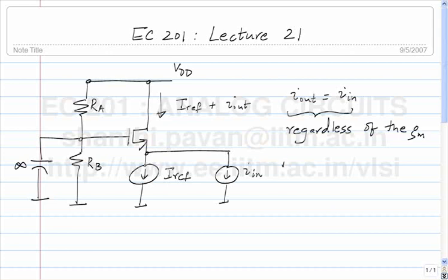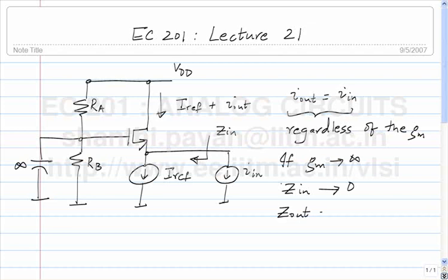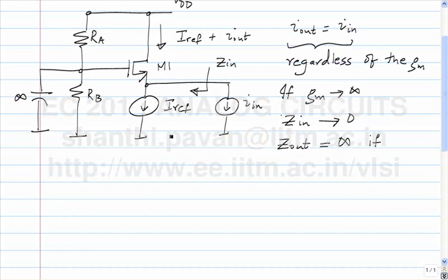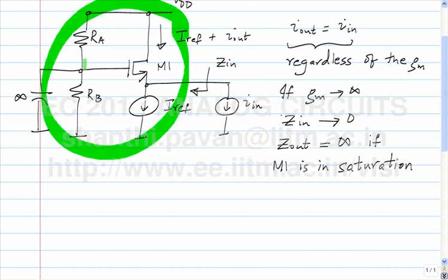However, if gm tends to infinity, we see that z_in — the input impedance looking in — becomes 0, so that this behaves like an ideal current controlled current source. Z_out is infinity, as long as M1 is in saturation. M1 being in saturation is trivial in this circuit because the gate potential is lower than the drain potential, so there is no way this transistor can be in any region other than saturation.